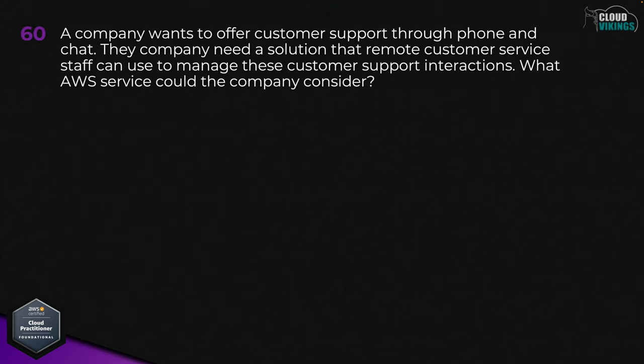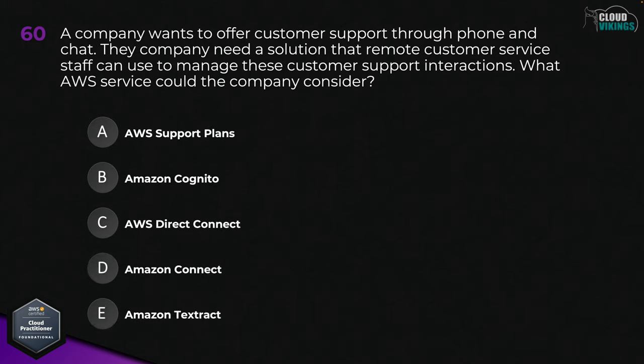Question sixty: a company wants to offer customer support through phone and chat. The company needs a solution that remote customer service staff can use to manage these customer support interactions. What AWS service could the company consider? Options are: A, AWS Support Plans; B, Amazon Cognito; C, AWS Direct Connect; D, Amazon Connect; or E, Amazon Textract. The answer here would be D, Amazon Connect.